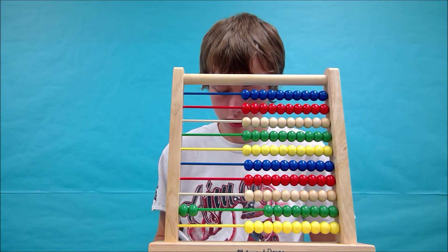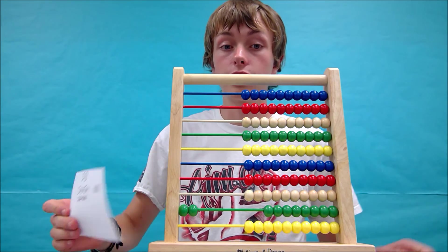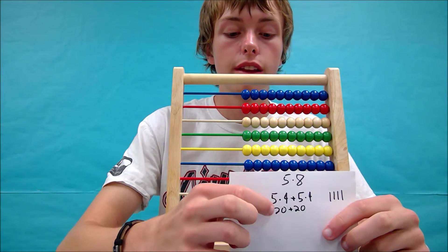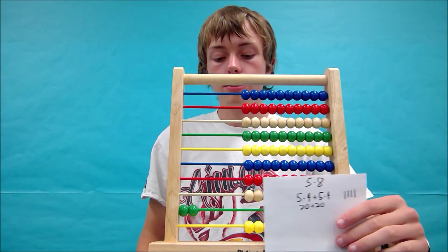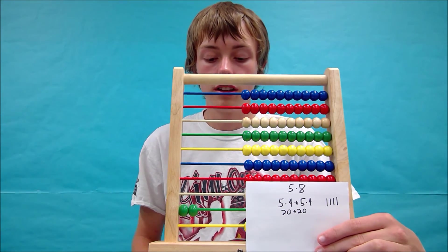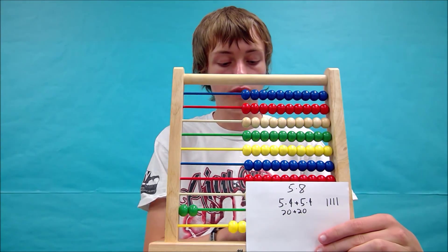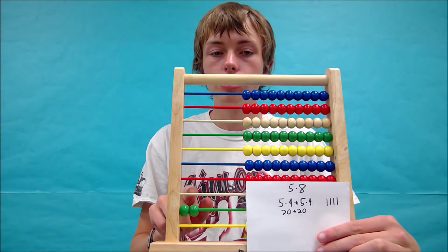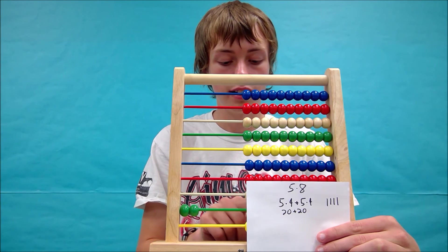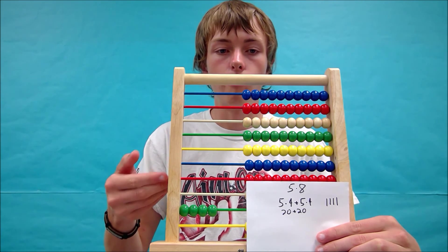We're now going to do this problem, which is a lot easier than counting out 8 groups of 5, which is 20 plus 20. So instead of doing another 4 groups of 5, 1, 2, move them back, 3, 4, we can just double this number and go like that. And we have 40.